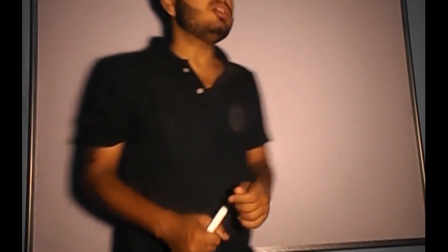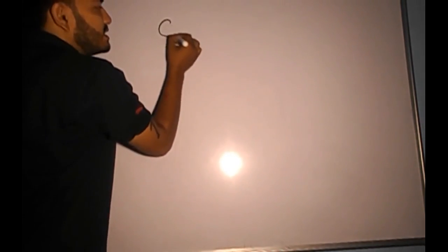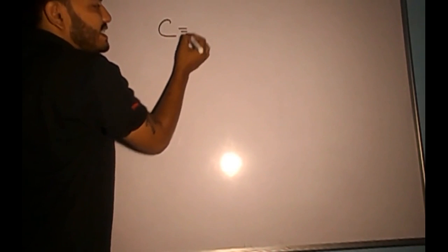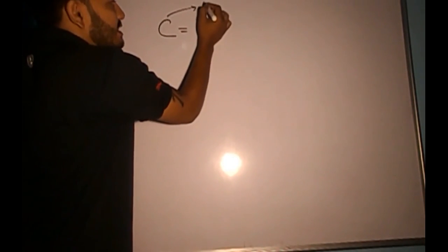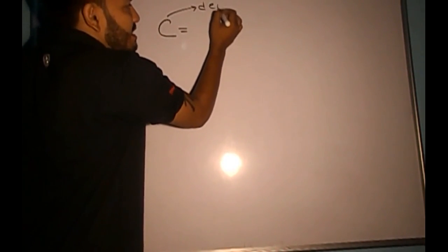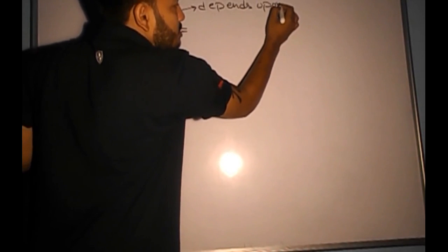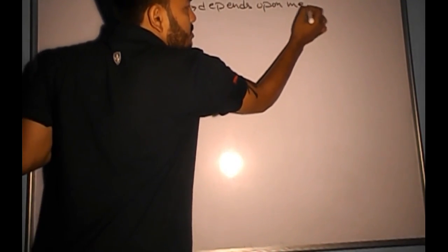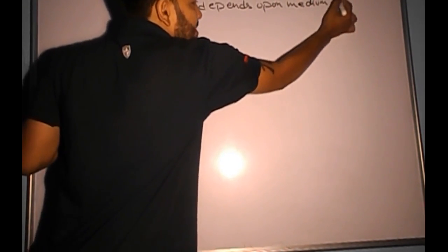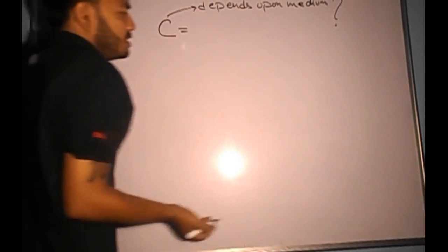Hello students. Today we are going to study permittivity, relative permittivity, and the dielectric constant of a medium. The Coulomb's constant C was not an independent constant — instead it depends upon the medium.